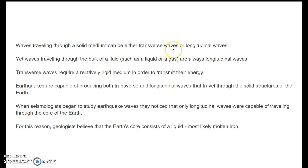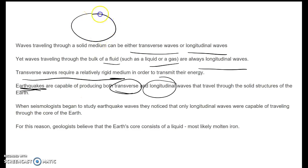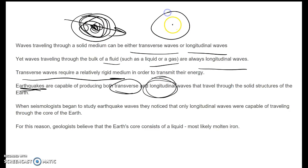In a solid medium, we can have either transverse or longitudinal waves. But waves traveling through a fluid are always longitudinal — so water waves, sound through air or gas or liquid, are longitudinal. Transverse waves need a more rigid medium to transport energy. When we talk about earthquakes, we thought they would be transverse waves, but we also see longitudinal waves. What that told scientists is that while the ground is solid, the longitudinal waves passing through the center of the earth mean there must be a fluid somewhere inside. That's why we believe the earth is mostly molten iron on the inside — based on the longitudinal waves measured in earthquakes.